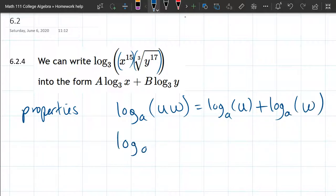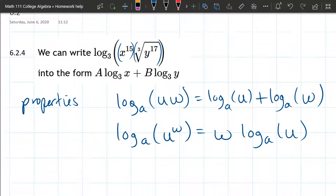The second property we have is U to the W power. Now you want to make sure you're writing very carefully. You want your product to not look like your power. So make sure that your exponent doesn't get lazy and start falling down, because it will look like it's a product. So what happens here is this W, the power goes in front. So this is W log base A of U. All right, these are the two properties we're going to use.